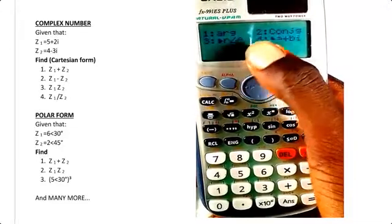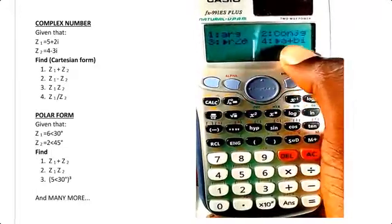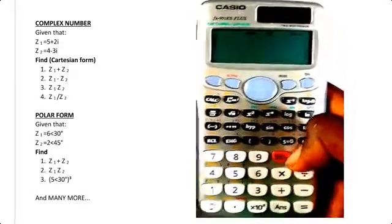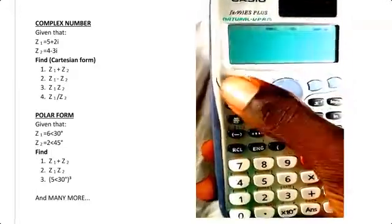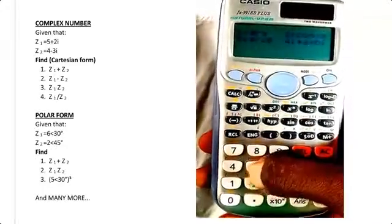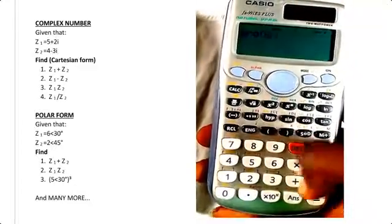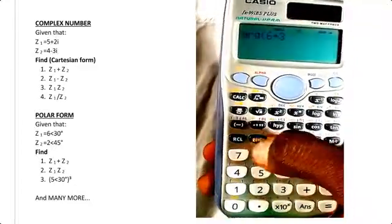You can also change to Cartesian form. Let's say we want to find the argument of 6 + 3i, so we press Shift, 2, then 1, of 6 + 3i, equals.